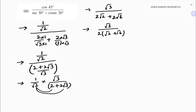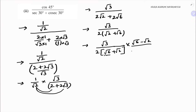Before rationalizing, let's rearrange: √3 / (√6 + √2). We write the bigger value first — √6 + √2 — to avoid getting a minus sign. Now we rationalize by multiplying by (√6 − √2)/(√6 − √2).